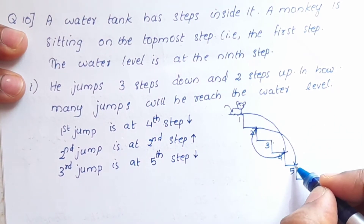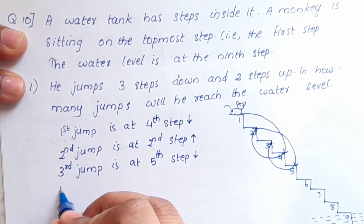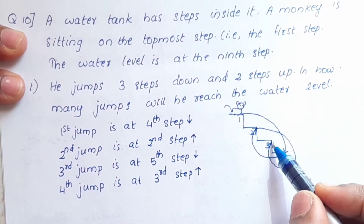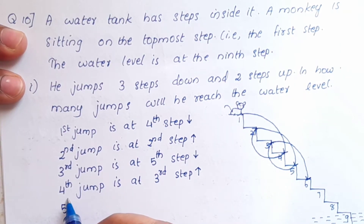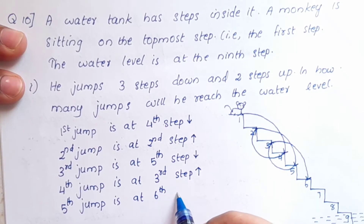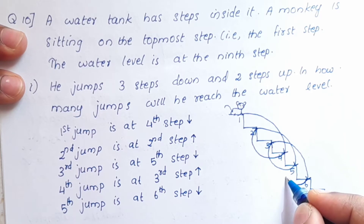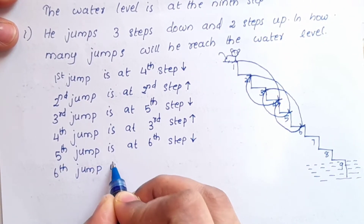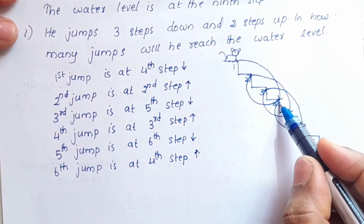The third jump: 3 steps down lands on the 5th step, then 2 steps up to the 3rd step. Continuing, the fourth jump takes the monkey 3 steps down to the 6th step.